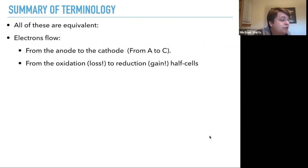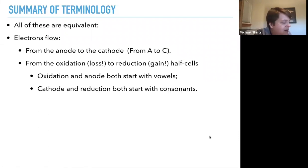From oxidation to reduction half cells, right? Oxidation is a loss of electrons. And so therefore the electrons have to go from there to reduction, which is gaining electrons. So they go from the oxidation half cell to the reduction half cell. Oxidation and anode both start with vowels. Cathode and reduction both start with consonants. So that's how you can remember it. Oxidation, anode are the same things. Cathode, reduction, those are the same. Oxidation, anode, both vowels. Cathode reduction, both consonants.